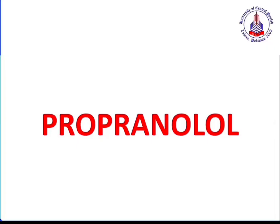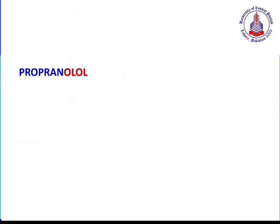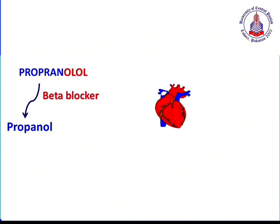Today we will discuss propranolol. The '-olol' suffix indicates that this drug is a beta blocker. Propranolol has a propanol moiety, whereas generally catecholamines have an ethanol moiety. Propranolol acts as an antagonist — that's why it has a propanol chain instead of an ethanol chain.